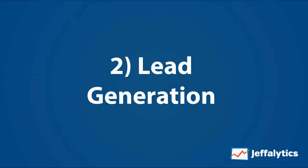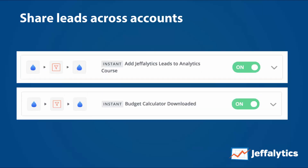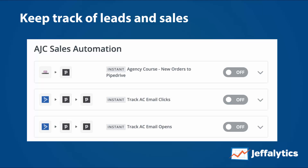Number two: lead generation. We can take Facebook lead ads and automatically integrate them into our email marketing systems. Facebook actually recommends Zapier as the main system for taking leads out of their lead ad system and putting them into your email marketing platform. Survey responses can turn into leads really easily, and you can share leads across accounts. We can also keep track of leads and sales — anything from WooCommerce or ActiveCampaign can go into Pipedrive, which is our CRM system.